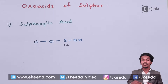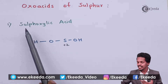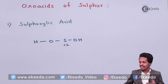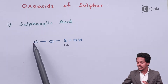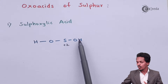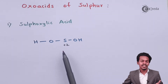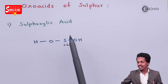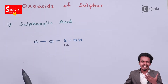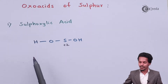In this topic I am going to talk about a few oxoacids of sulfur, starting with the first one: sulfoxylic acid. The structure is HOSOH, where sulfur has an oxidation state of +2. The molecular formula is H₂SO₂.